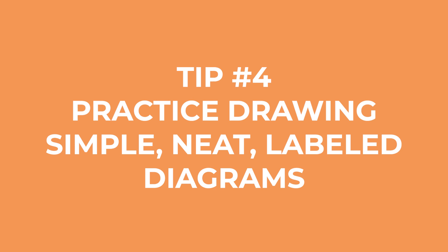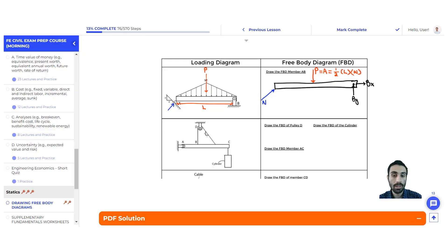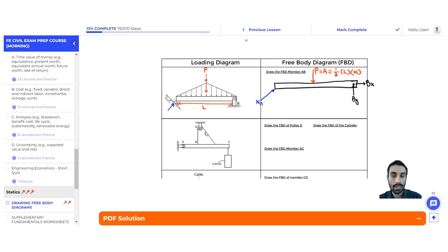Tip number four: practice drawing simple, neat, labeled diagrams. You might be thinking this exam is timed and you don't have time to draw these — but that's no excuse. Imagine when we're looking at statics, mechanics and materials, dynamics, or even fluids like water pressure — we have to visualize what's happening. For statics, imagine that free body diagram. If you have it drawn incorrectly in the planning stage, your solution is going to be wrong.